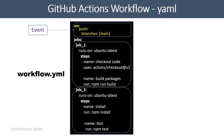The 'on' keyword is used to define the events which will cause the jobs to be executed. In this particular example, whenever a push happens to the main branch, the jobs are executed.